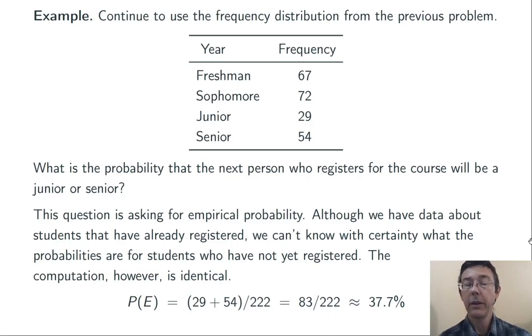Although the computation is the same, the philosophy behind it is a little different. This time, our probability calculation is based on observation, so it's empirical probability, not classical.